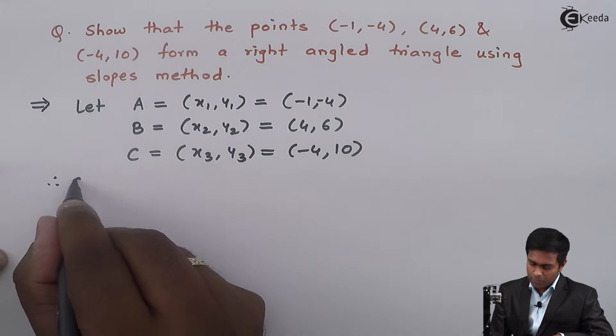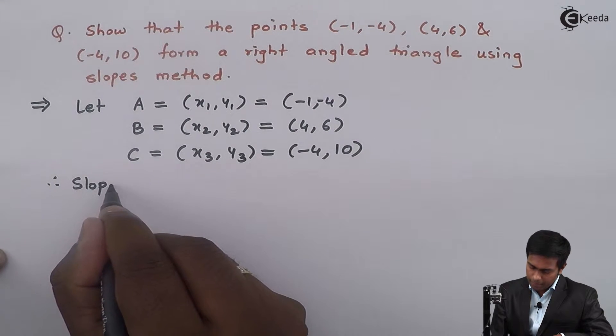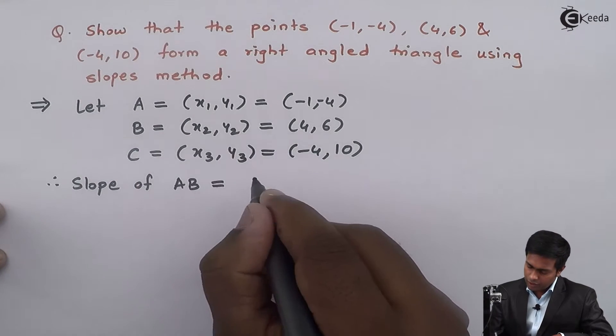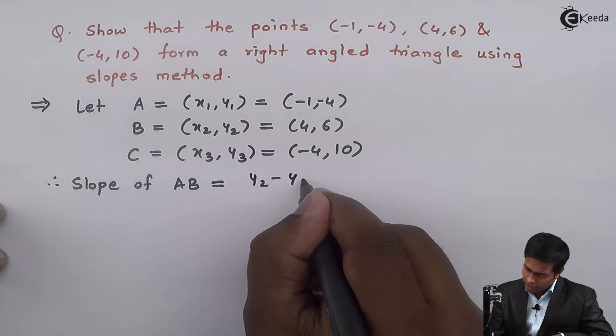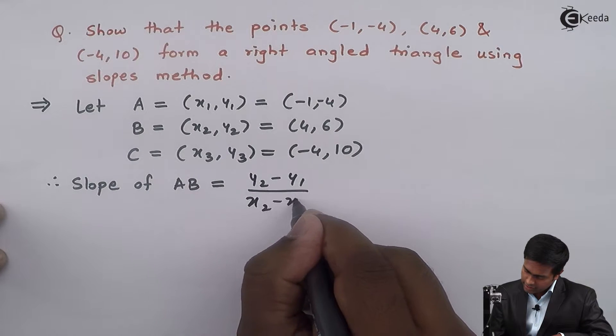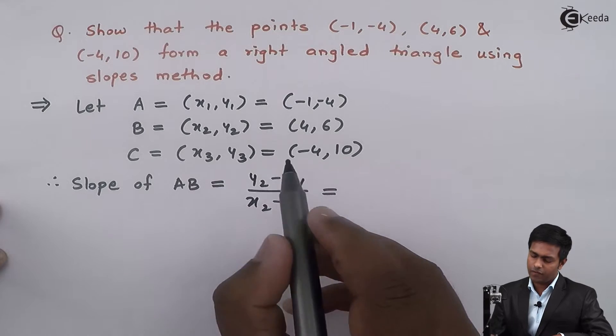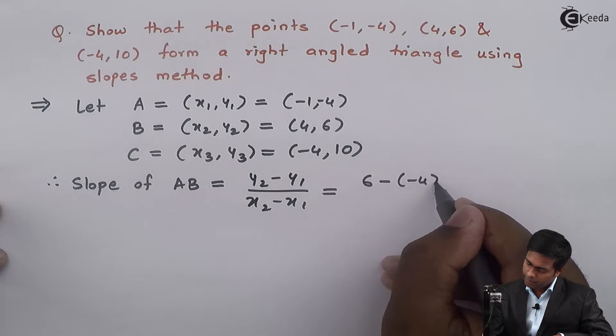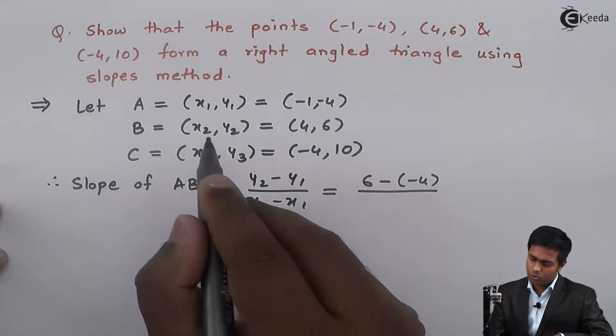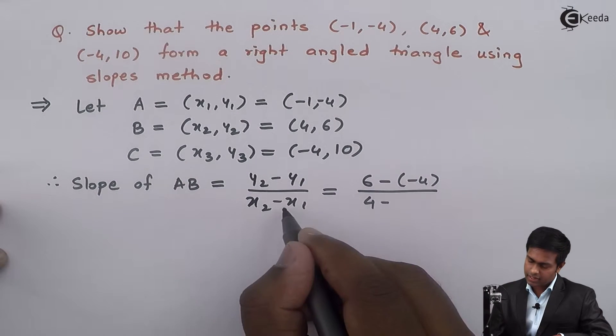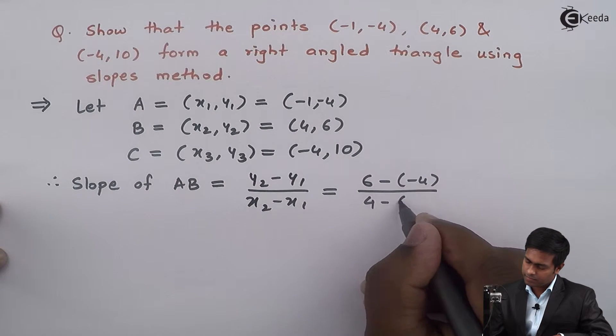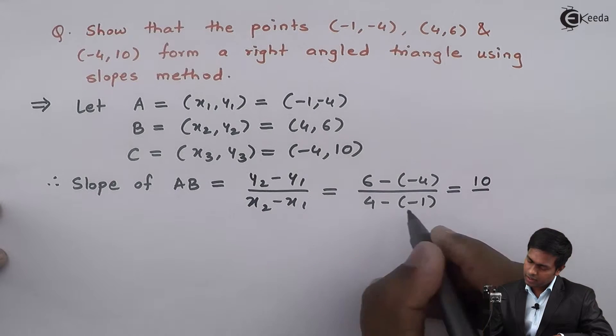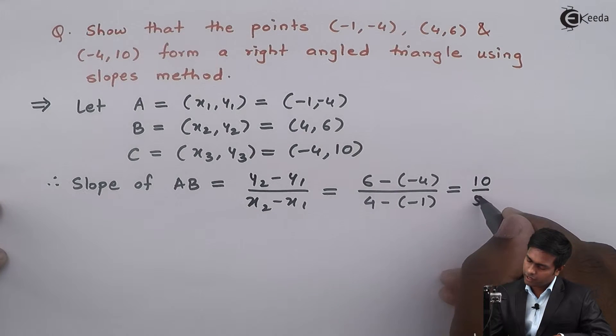Slope of AB equals (y₂ - y₁)/(x₂ - x₁). By this formula we get (6 - (-4))/(4 - (-1)) = (6 + 4)/(4 + 1) = 10/5 = 2.